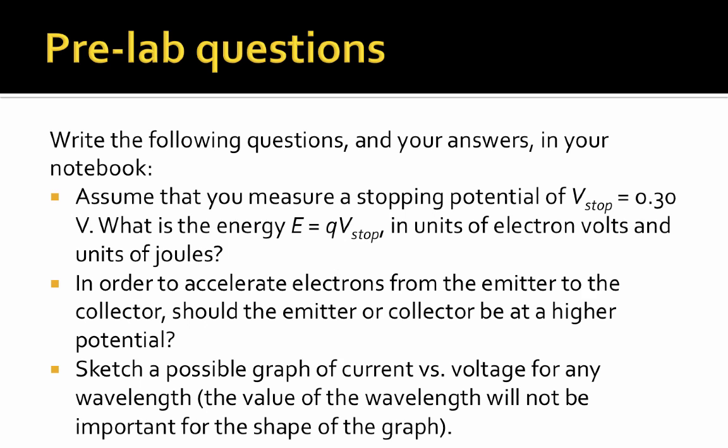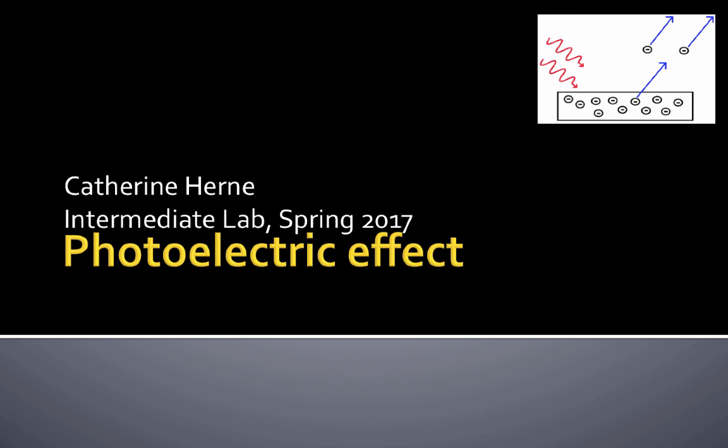So your pre-lab questions are on the lab sheet as well as right here. Write these in your notebook and answer the questions also in your notebook. Assume that you measure a stopping potential of V-stop equals 0.30 volts. What would the energy be of the electrons in units of electron volts and units of joules? Two, if we want to accelerate electrons from the emitter to the collector, should the emitter or the collector be at a higher potential? And three, sketch a possible graph of current versus voltage for any particular wavelength. Just a possible graph of current versus voltage. And now you're ready to go and do the photoelectric effect experiment.